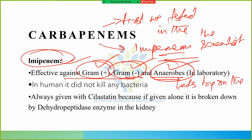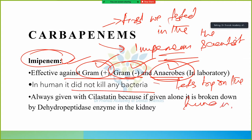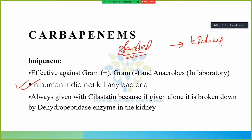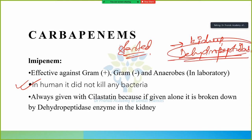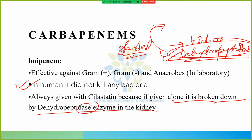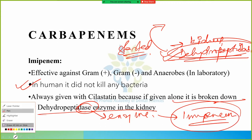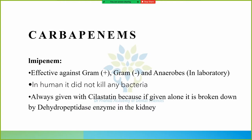When they tried imipenem on human beings, they found it did not kill any bacteria. It was killing all bacteria in the laboratory, but not killing any bacteria in human beings. Research revealed that in the kidney there is something known as dehydropeptidase, which was breaking down imipenem and not allowing the antimicrobial to act.